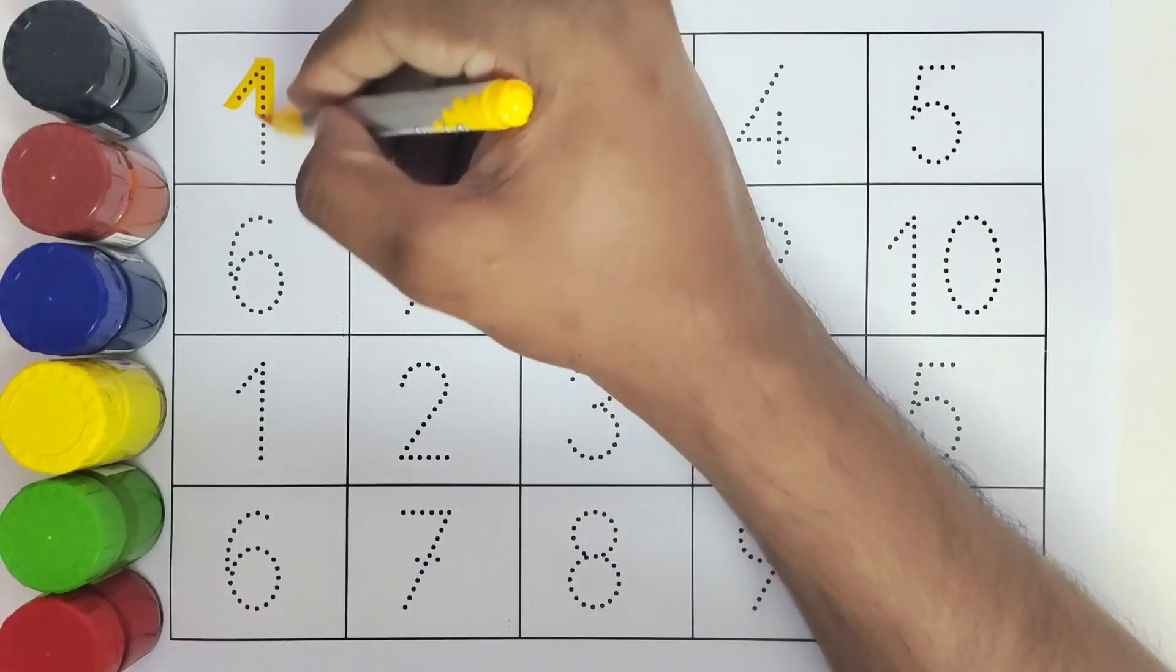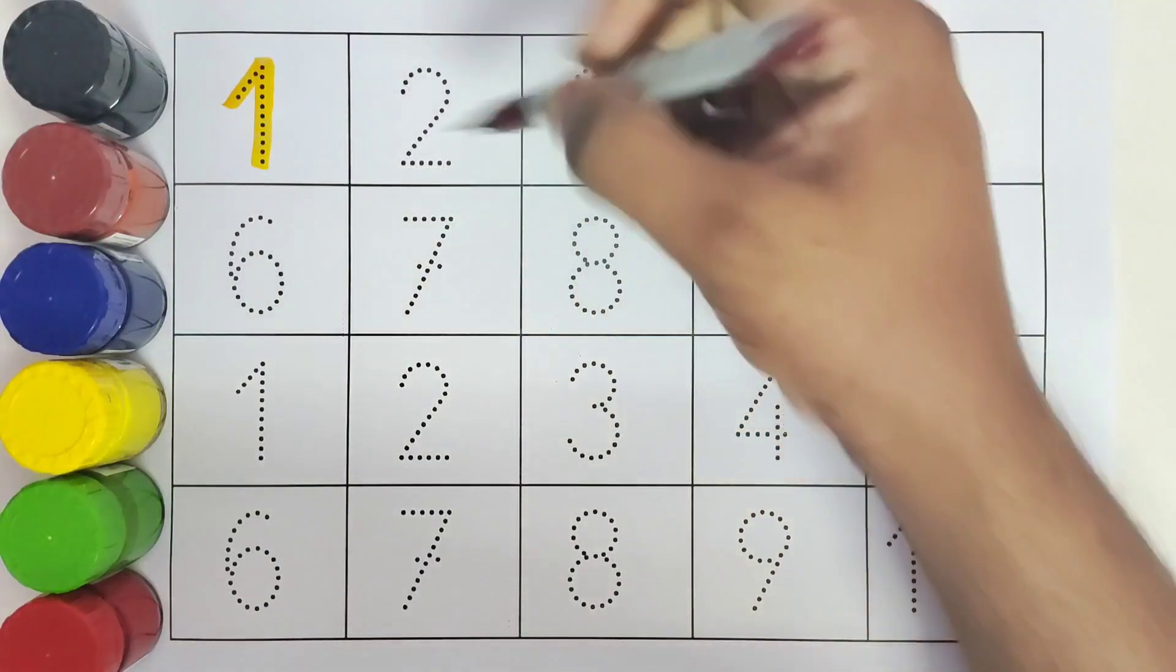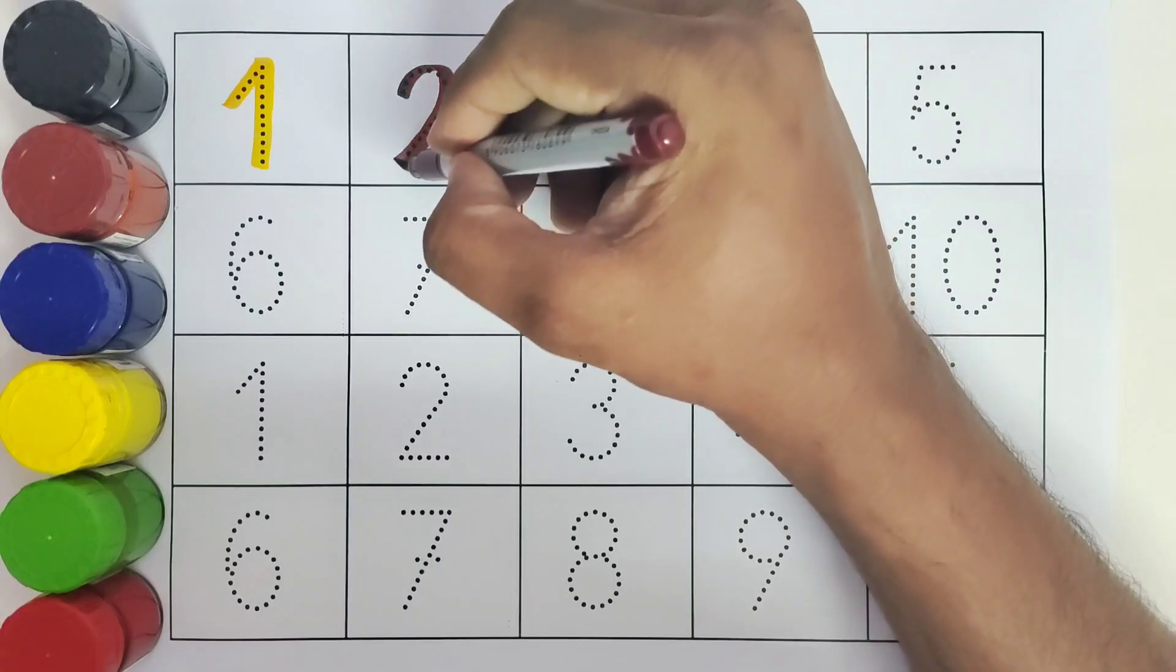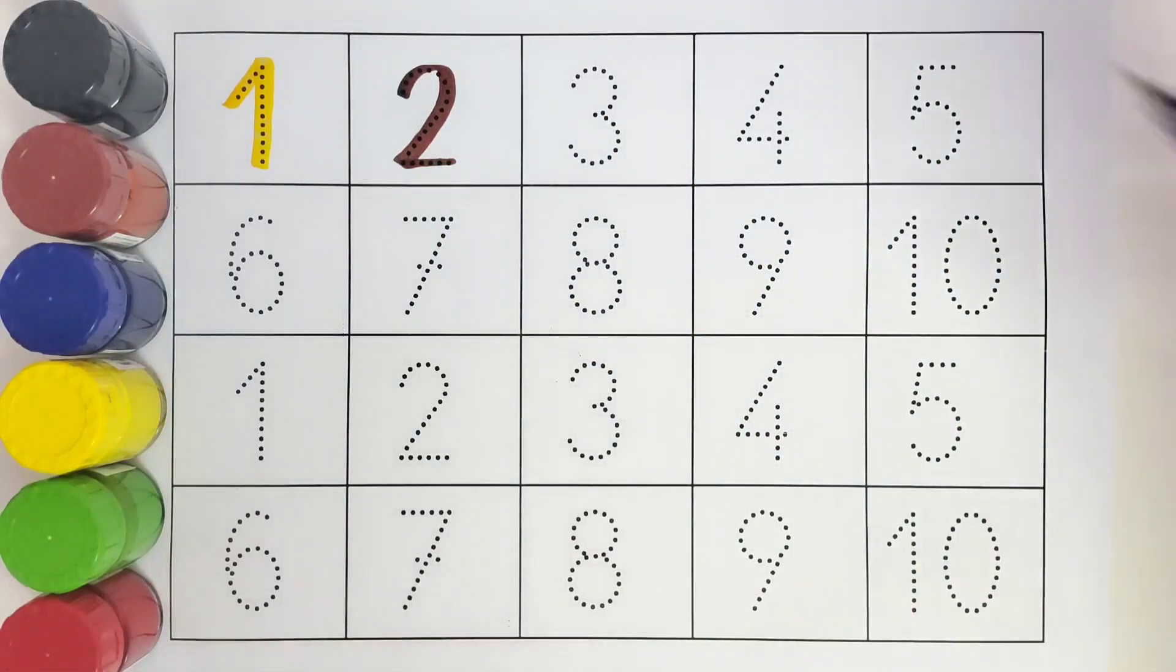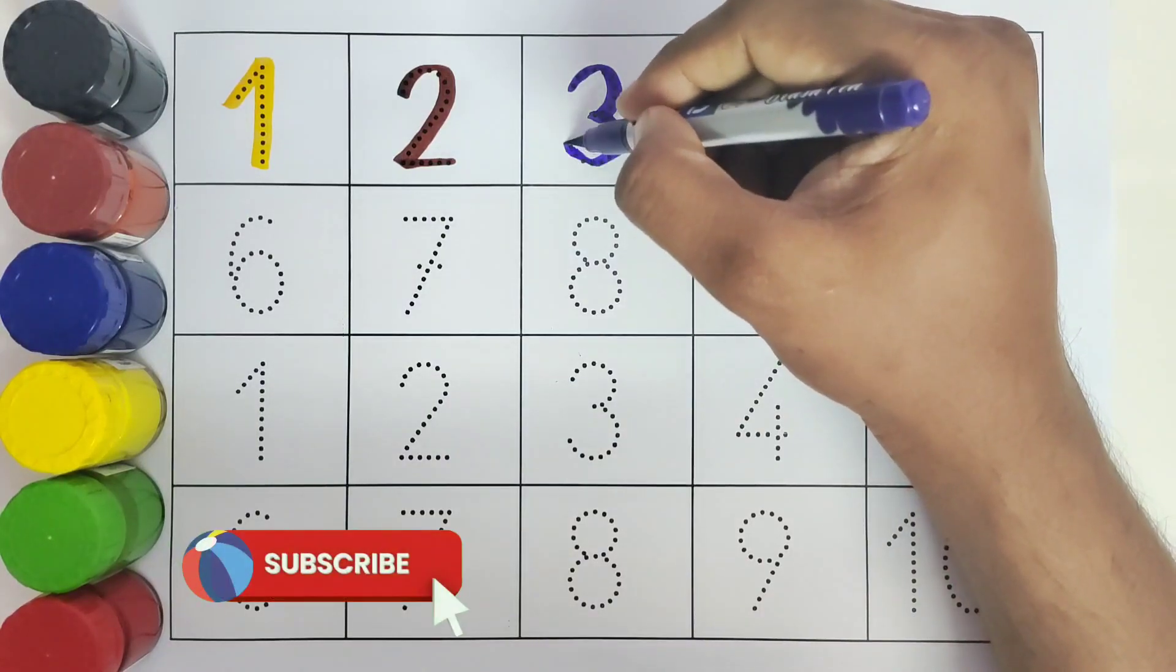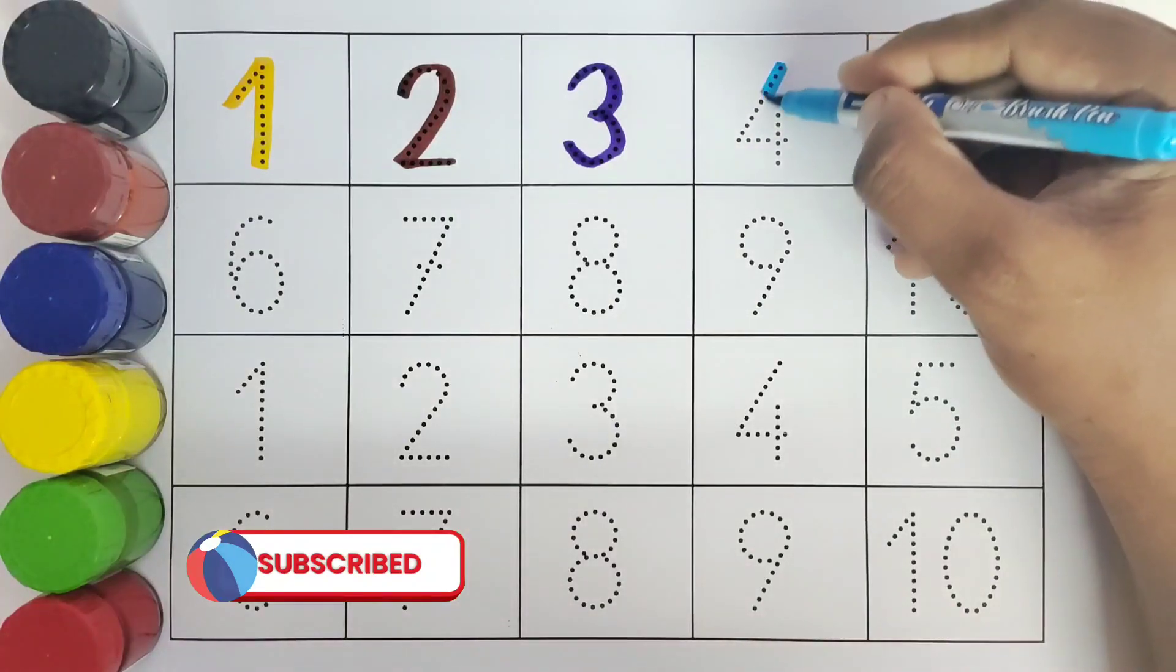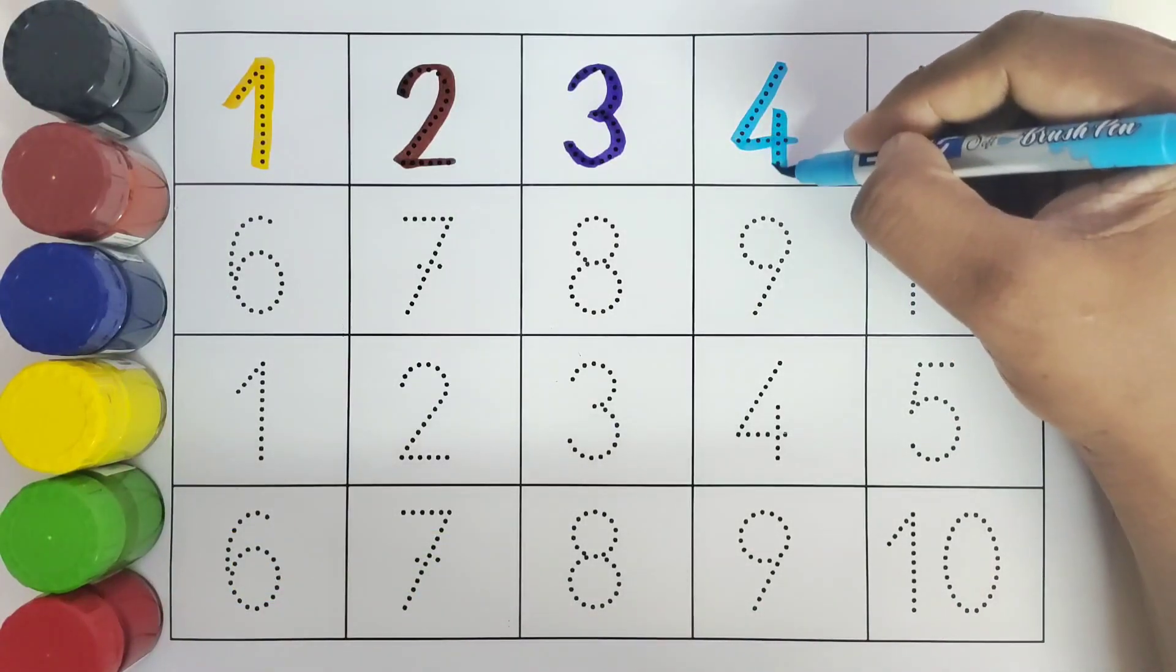This is 1, number 1. This is 2, number 2. This is 3, number 3. This is 4, number 4.